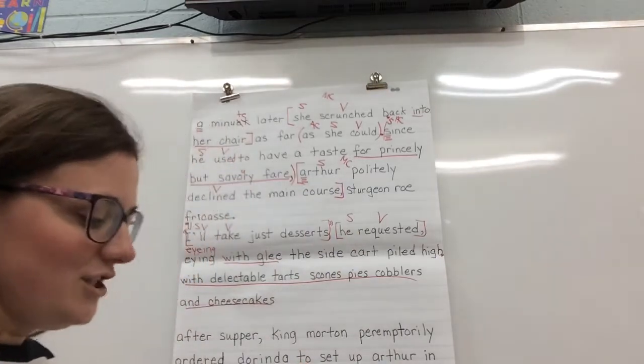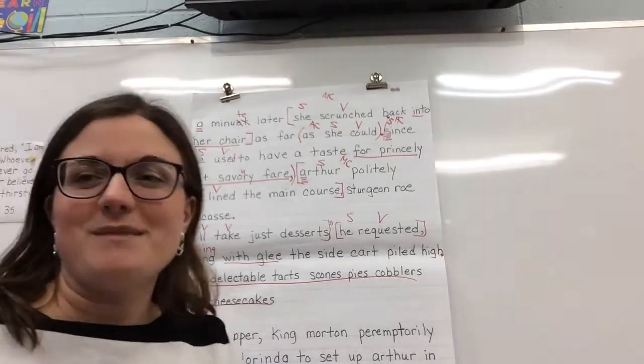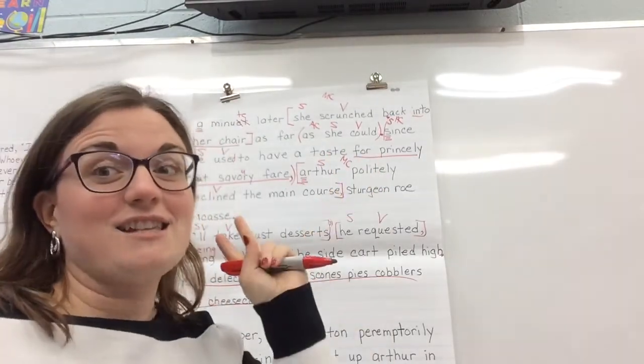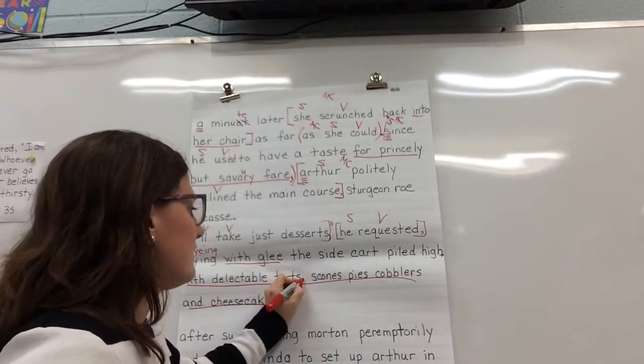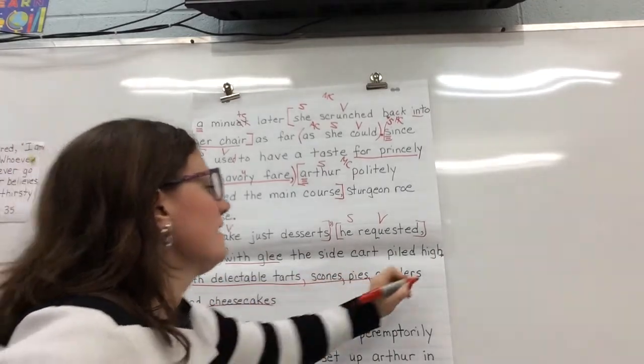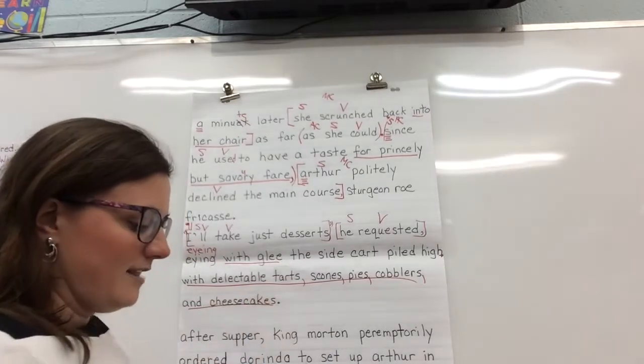Delectable is delicious. We've got tarts, scones, pies, cobblers and cheesecakes. What are we missing in there? That's a lot of items in a series. And that's when it's three or more, we add commas. So we're going to do tarts, comma, scones, comma, pies, comma, cobblers, comma and cheesecakes. And we're going to end with a period.